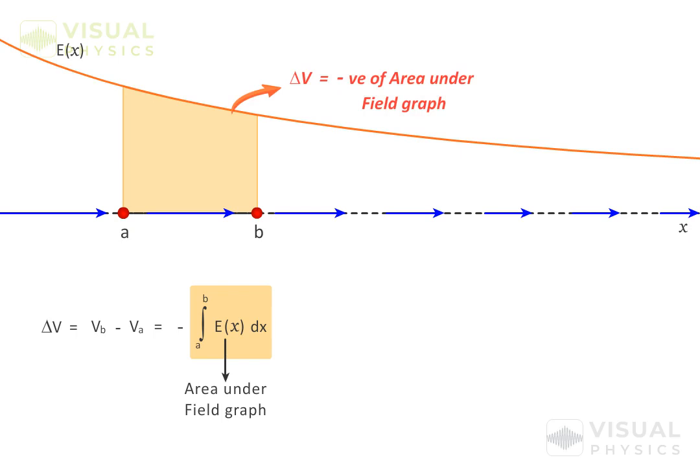If we move a small distance along this line, the small change in potential equals this term. Rearranging this equation, we can say that the field at a point along this line is the negative gradient of potential at that point along that direction.